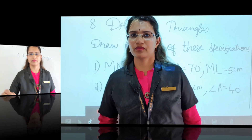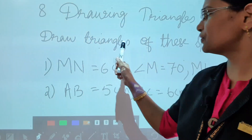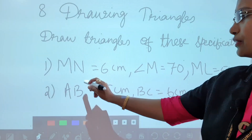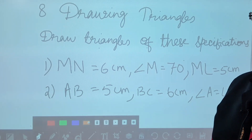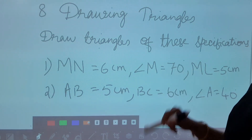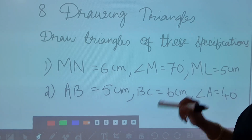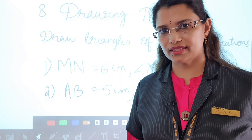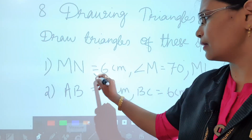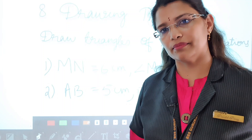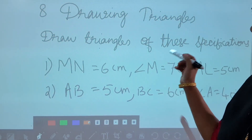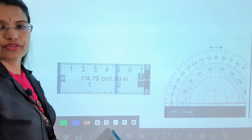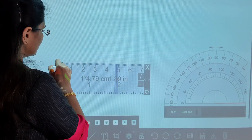Children, the first question is: draw triangles of these specifications. The first question: MN is equal to 6 centimetres, angle M is equal to 70 degrees, and ML is equal to 5 centimetres. How to do this? First, draw MN equal to 6 centimetres.